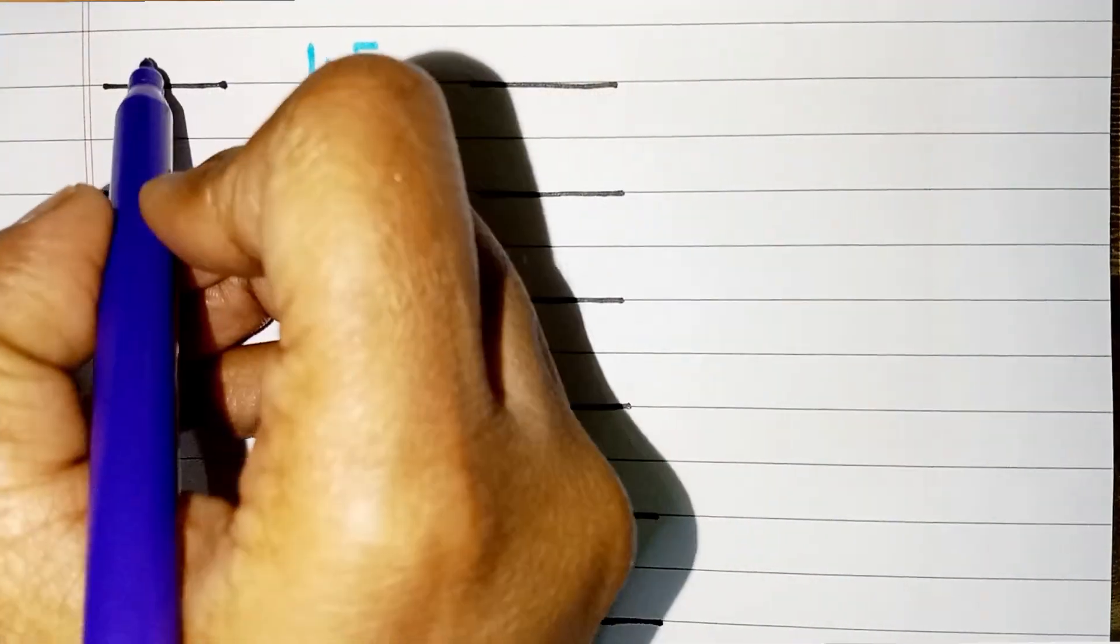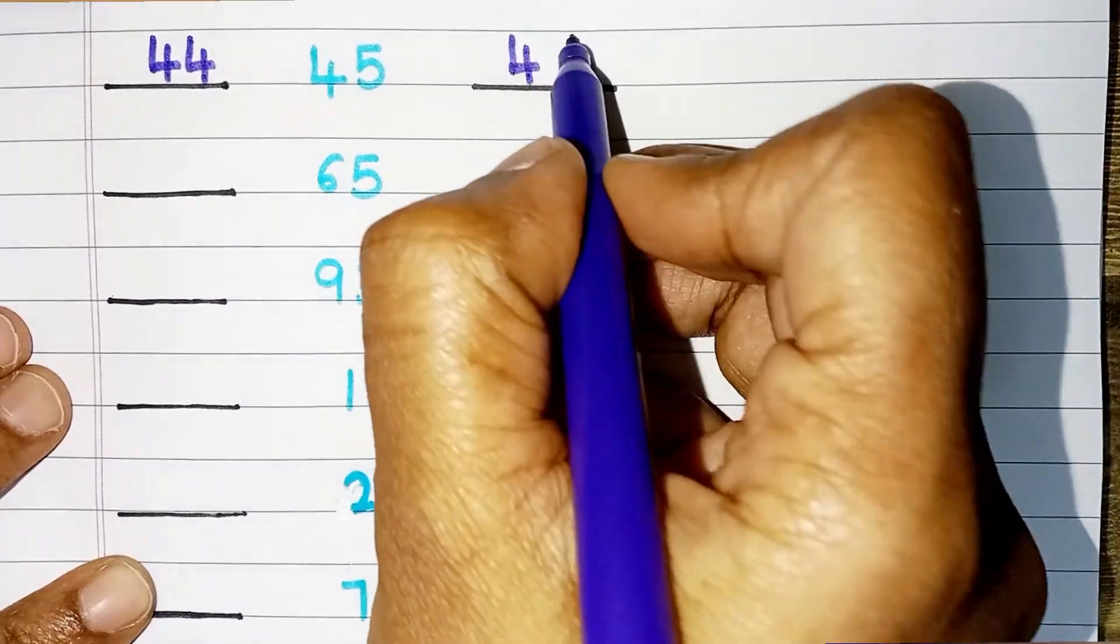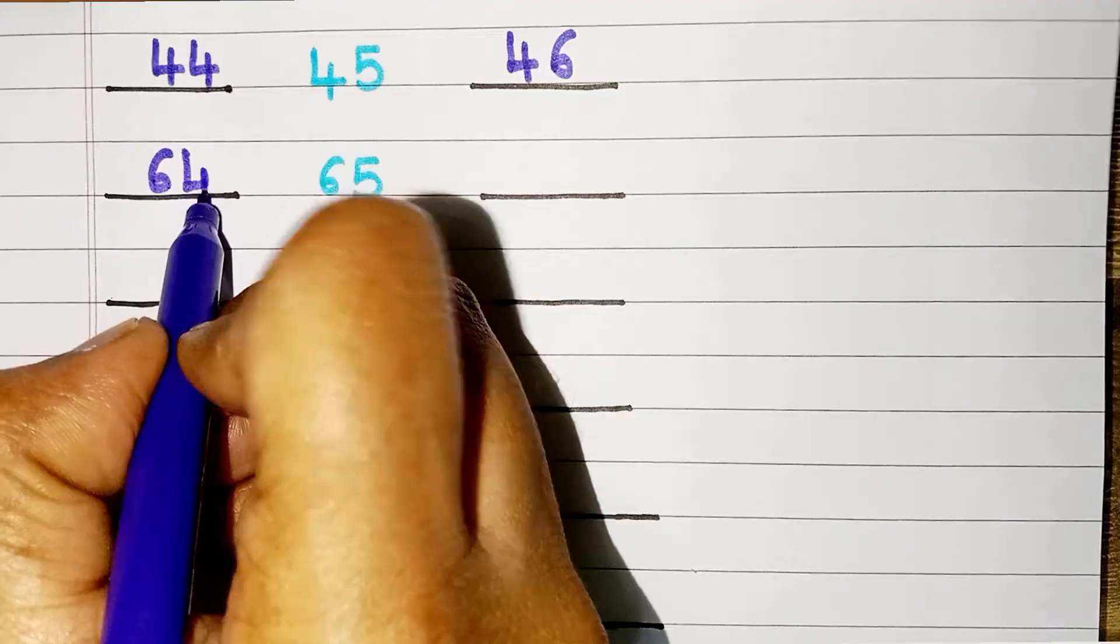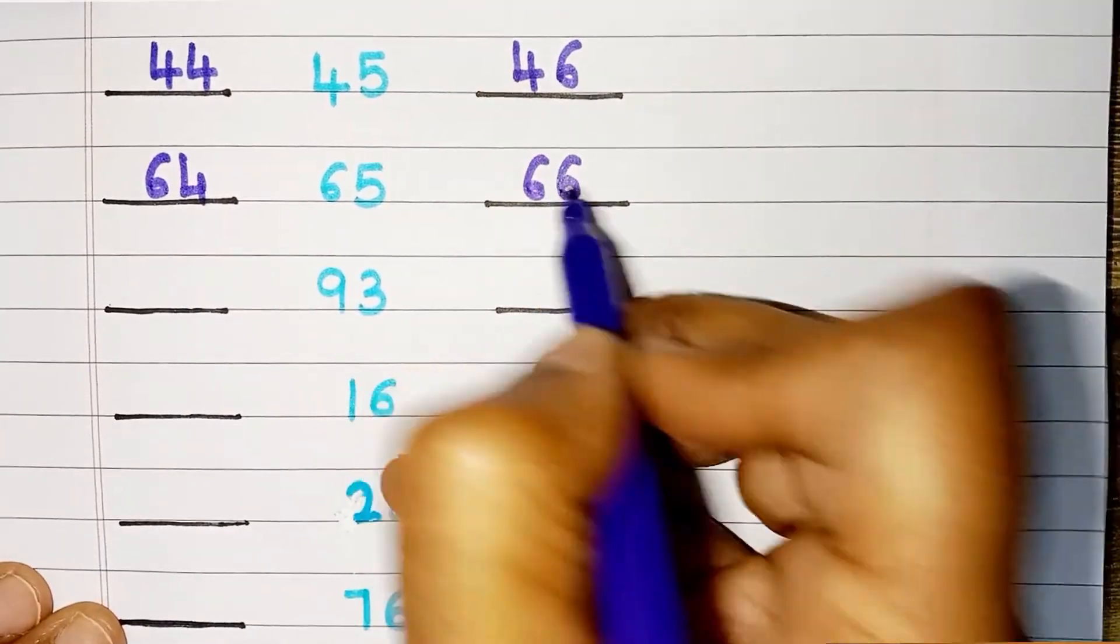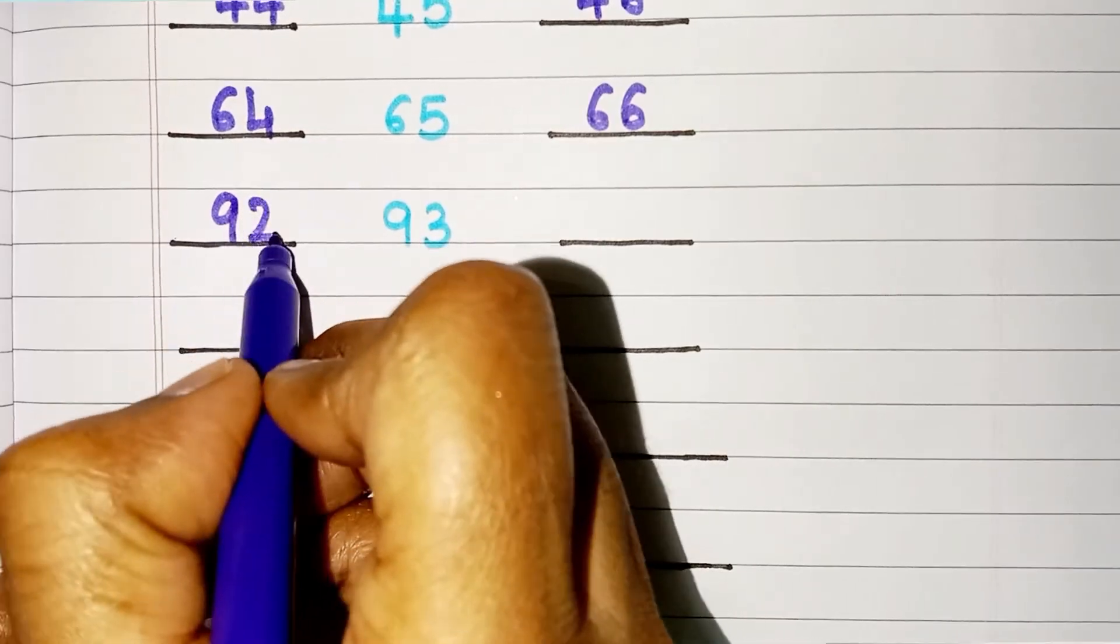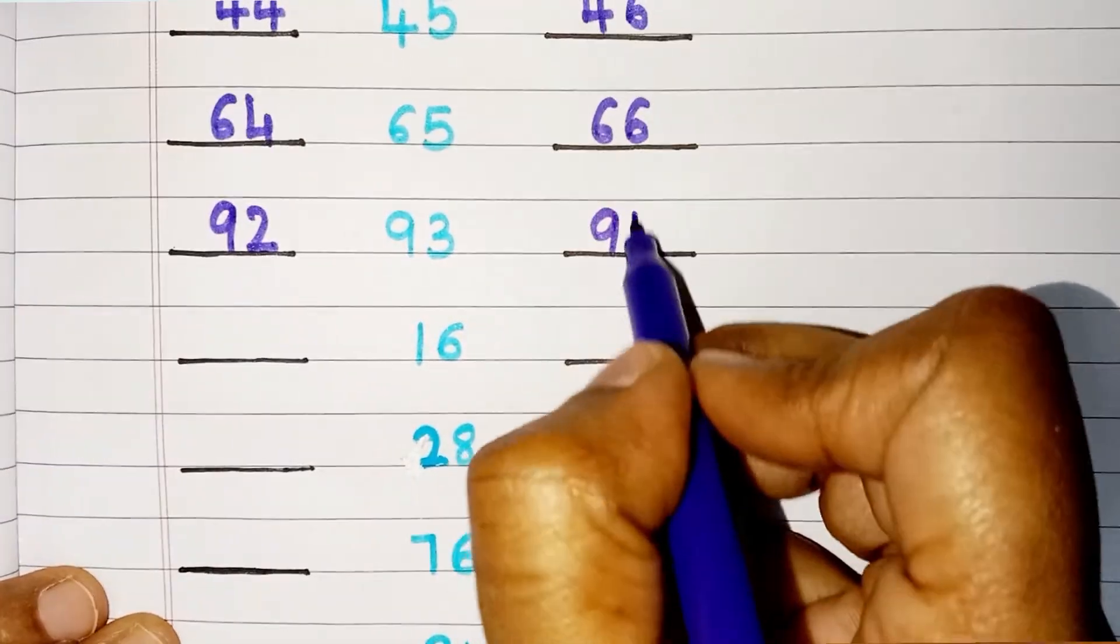Number before 45 is 44. After 45 is 46. Number before 65 is 64. After 65, 66. Number before 93 is 92. After 93, 94.